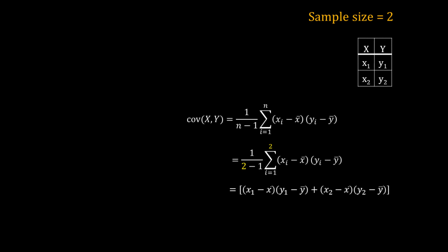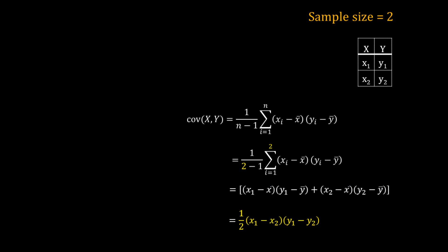Now let us calculate the mean of x, that is x-bar. x-bar is equal to x1 plus x2 divided by 2. Similarly, the mean of y, y-bar, is equal to y1 plus y2 divided by 2. After replacing x-bar and y-bar and rearranging all the terms in the covariance calculation, I get 1/2 times (x1 minus x2) times (y1 minus y2).